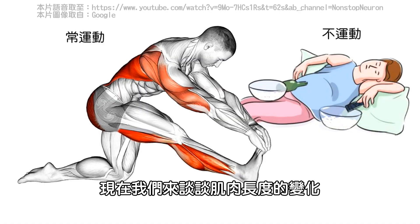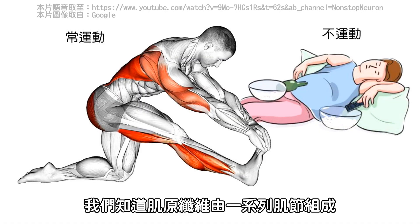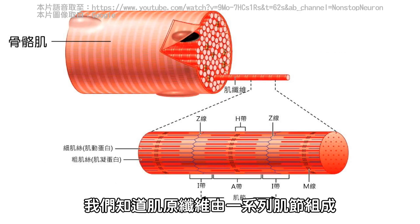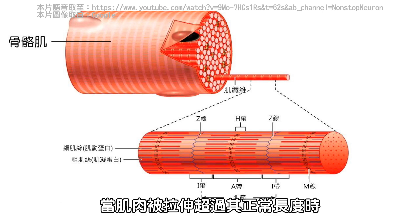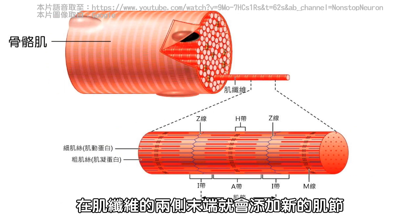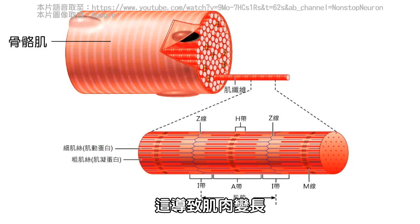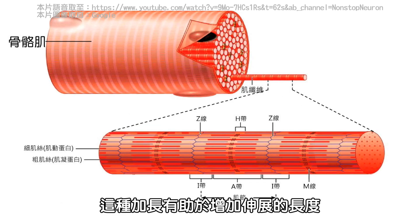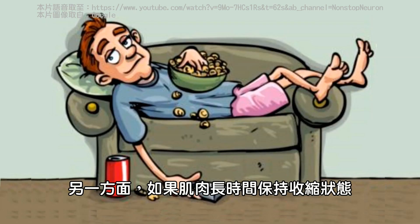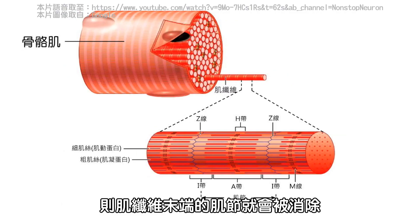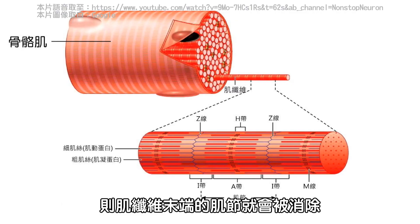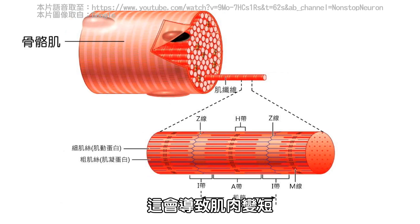Now let's talk about adjusting the length of the muscle. We know that myofibrils are made up of an array of sarcomeres. When muscles are stretched beyond their normal length, new sarcomeres are added at the ends of the muscle fibers, resulting in the lengthening of the muscle. This lengthening helps accommodate the increased stretch. On the other hand, if a muscle remains shortened for an extended period, the sarcomeres at the ends of the muscle fibers are deleted, causing muscle shortening.